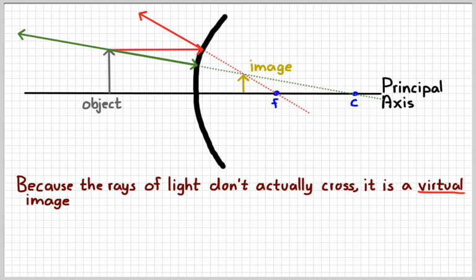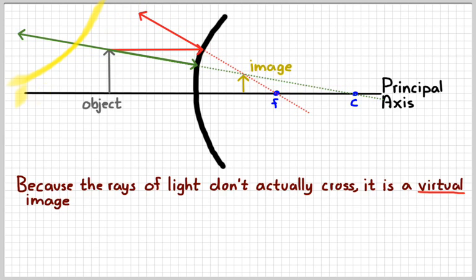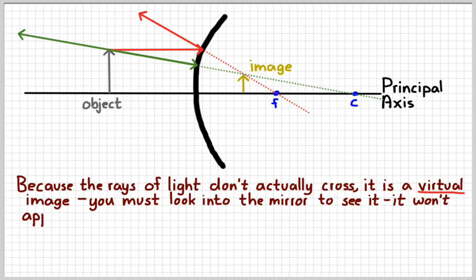The reason you see the image is that your eye, which is over to the left, receives the reflected rays and assumes light travels in a straight line. So your eye traces those rays back, and the point where they appear to cross is where the image appears to be. Because we don't have physical rays of light actually crossing, we call this a virtual image. You can only see it by looking into the mirror — you can't project it onto a screen placed behind the mirror, just like the image in your bathroom mirror.